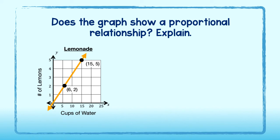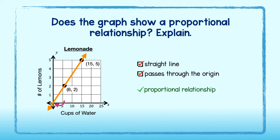Let's take a look. Since the line of the graph is straight and it goes through the origin, we can safely say that it does represent a proportional relationship.